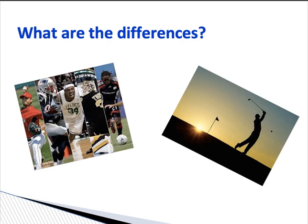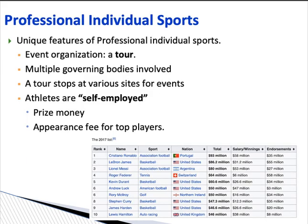To begin, think about what are the similarities and differences between professional team sports and professional individual sports in terms of business models and governance. We'll look at those similarities and differences, and try to understand what makes professional individual sports unique in terms of their business models and governance. There are four things we'd like to emphasize.